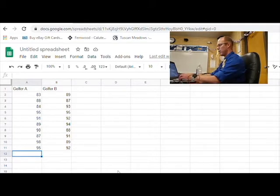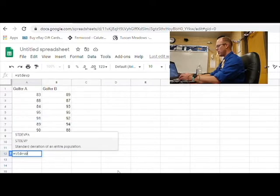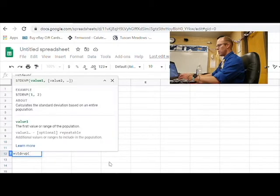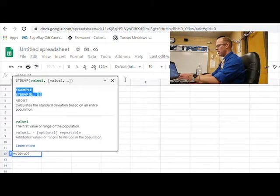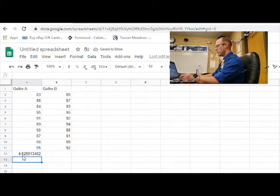So the command again is equals STDEVP for standard deviation and P for population. I'm going to open my parentheses and click X so I can get to my numbers and highlight them. We'll highlight those, close the parentheses and hit enter. Standard deviation for golfer A we're going to round that to the tenth, that's 4.6.